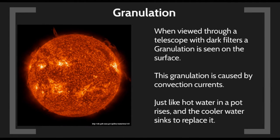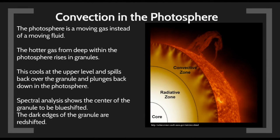If you look at the Sun through a telescope with proper filters, you'll see granulation. There are granules across the surface of the Sun caused by convection currents. Just like a pot of hot water, hot water from the bottom rises to the top, and cooler water from the top sinks to the bottom. The gas in the Sun does the same thing.